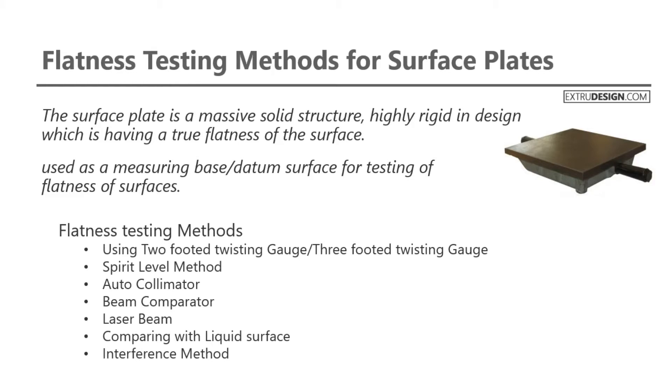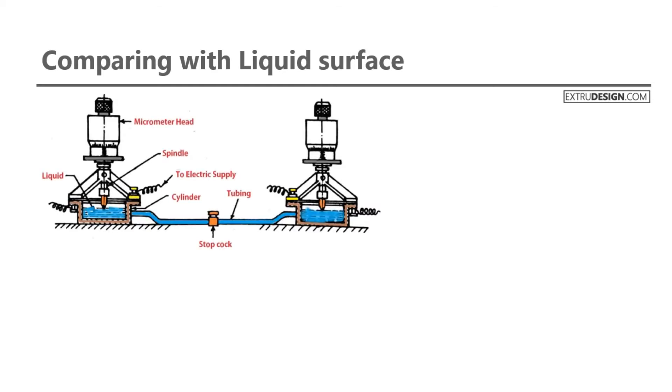In this video we are going to discuss only two flatness testing methods: comparing with liquid surface and beam comparator construction. Let us start with the first one, comparing with liquid surface. Check the schematic diagram of the apparatus used for flatness testing in this method.